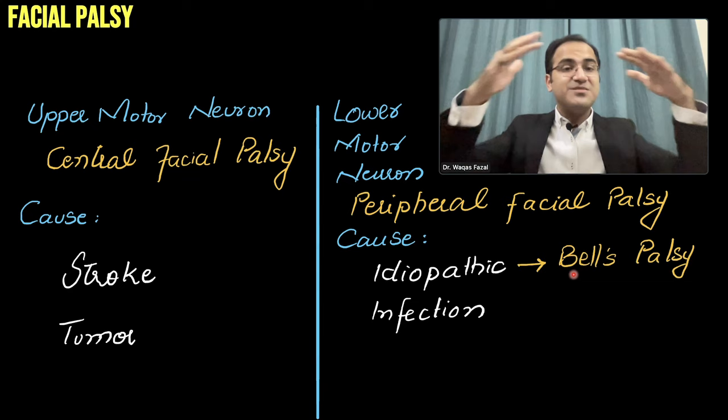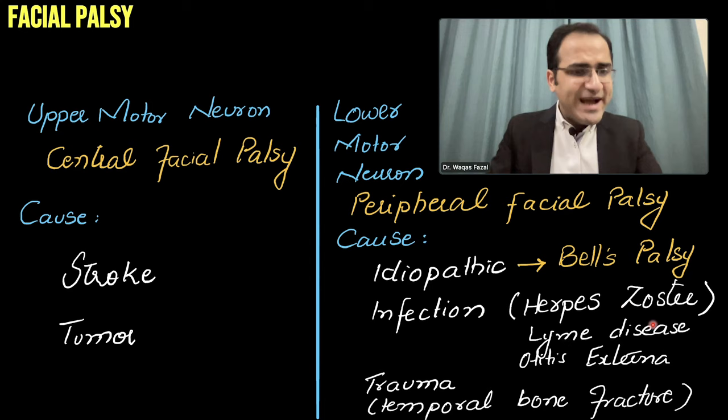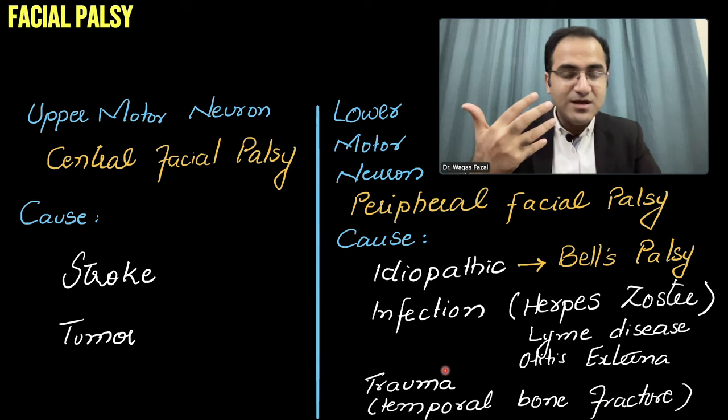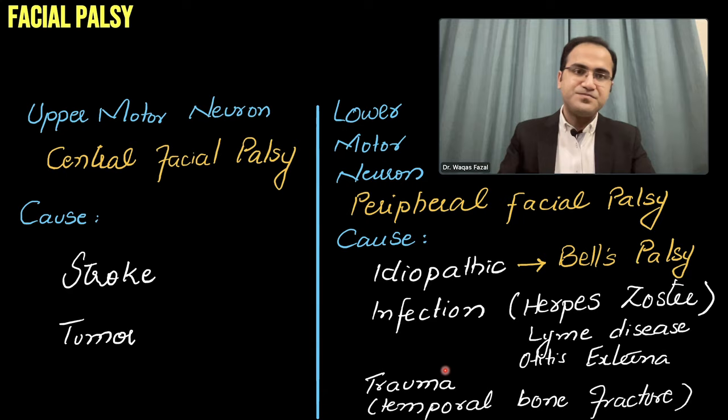Facial palsy is a general umbrella term; Bell's palsy is a specific type of facial palsy. Herpes zoster infection, Lyme disease, and otitis externa infection can cause facial palsy. Trauma or temporal bone fracture can also cause it. If you have ever seen Malala Yousafzai, the Nobel laureate, talking, you can see that her one side of the face is not moving properly — because she got a bullet that damaged the facial nerve.